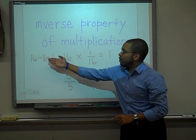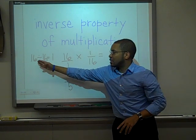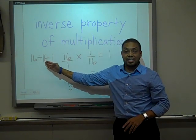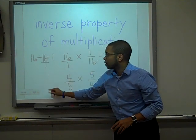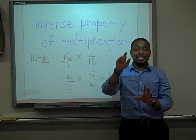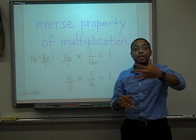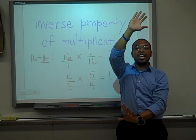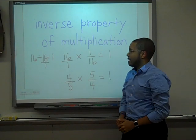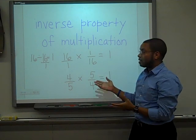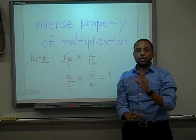Division is the inverse of multiplication. That's why when you say 16 divided by 16, you're really saying 16 times 1 sixteenth. When you divide, you actually are multiplying by the reciprocal, and that will always get you back to 1. Any number times its reciprocal gives you 1.